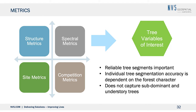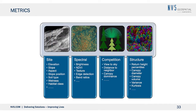In conifers, the geometric approach classifies very well. In broadleaves, it doesn't classify quite as well. We also can't capture subdominant and understory trees since we can't see them. We use those metrics to create information on tree variables of interest — biomass, basal area, timber. There are hundreds of metrics for each group. Site metrics could include elevation, slope, aspect, slope position, soil type, wetness, and habitat classification.